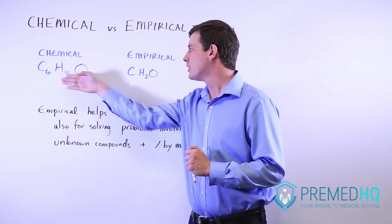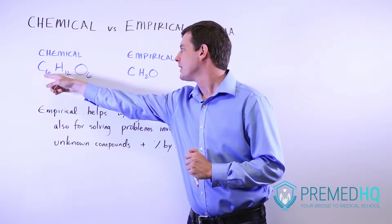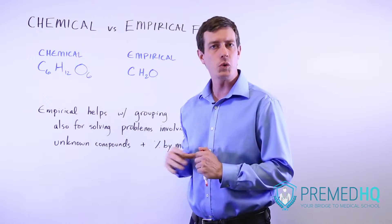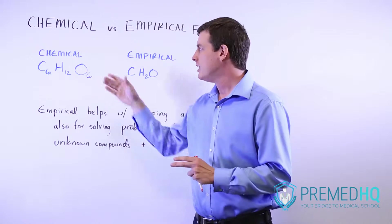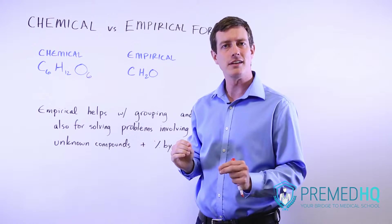If you were to count every single atom within a molecule, you would get the chemical formula. Here we have glucose and its chemical formula is C6H12O6. If you were to isolate a glucose molecule, these are the atoms that you would actually find within it.